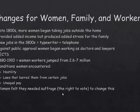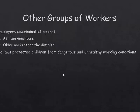Women felt they needed one thing to make this change, and that is suffrage — simply the right to vote. Employers also discriminated against African Americans, older workers, and the disabled. There weren't any laws that protected children from bad working conditions, so kids were hired as well — just like women — because you could pay them less money.